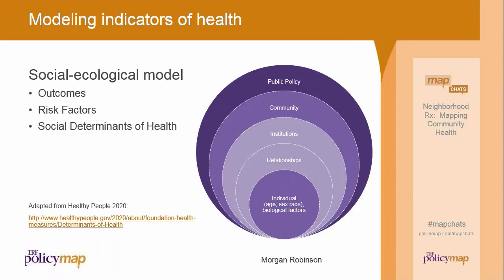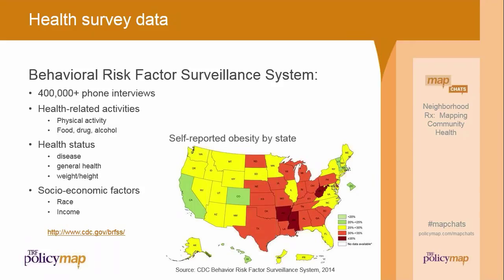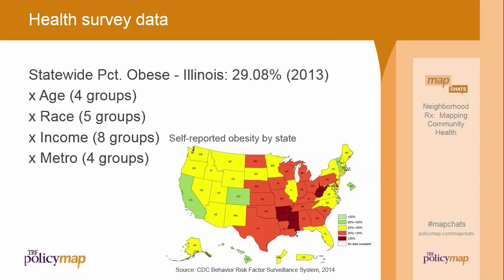Over the years, PolicyMap users have asked for nationally comparable local health data. To make this possible, we look to a longstanding CDC survey: the Behavioral Risk Factor Surveillance System, or BRFSS. This is a phone survey of over 400,000 people collected by state every year, and the survey questions are variables known to affect health or be directly associated with health outcomes. Knowing that health is related to social structures and systems allows us to create reasonable estimates based on the correlation of those variables to place, race, age, and income. We sampled the data and modeled these relationships so we can map out not only the statewide rate of obesity in Illinois, but also the estimated rate of obesity for each census tract in Chicago.